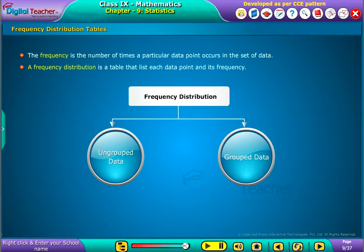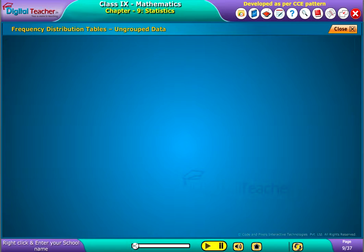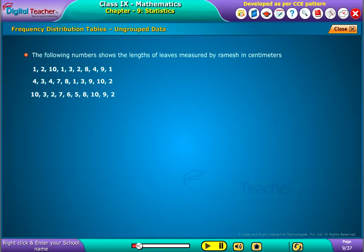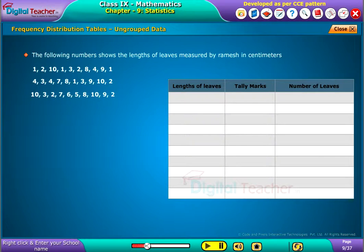Let us construct the frequency distribution table for ungrouped data. The following numbers show the lengths of leaves measured by Ramesh in centimeters. Here, the observations are ungrouped. To make the data organized, let us draw a tabular form with columns: lengths of leaves, tally marks, and number of leaves.